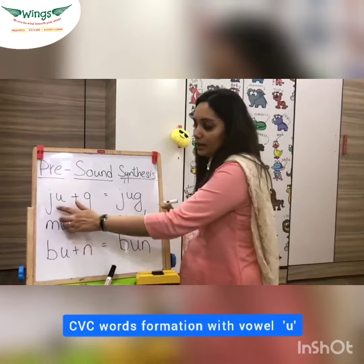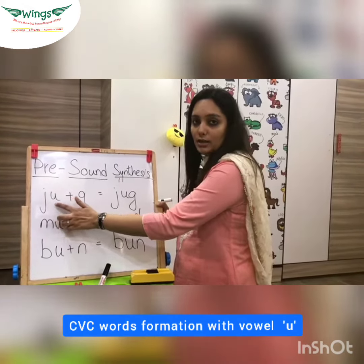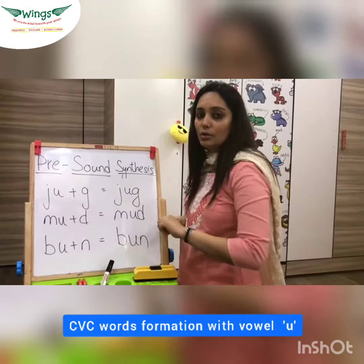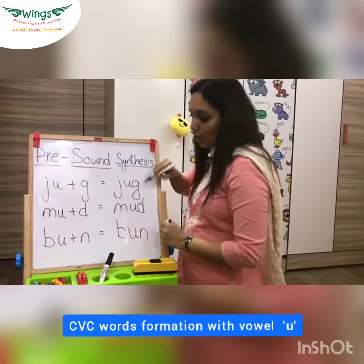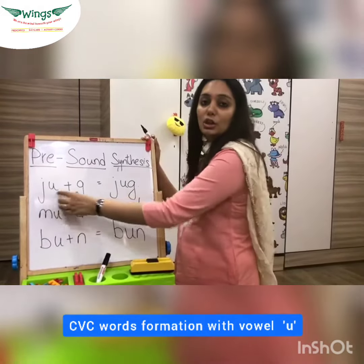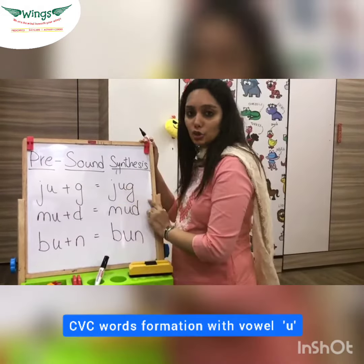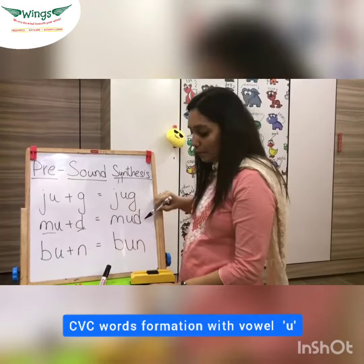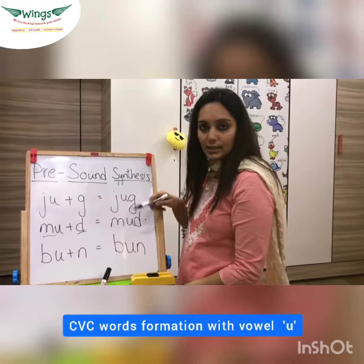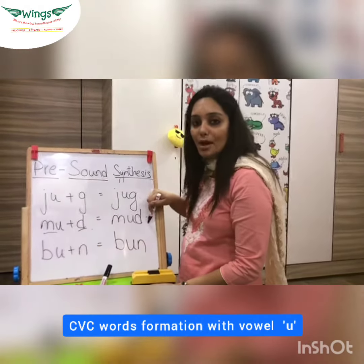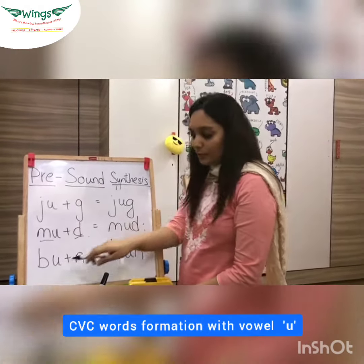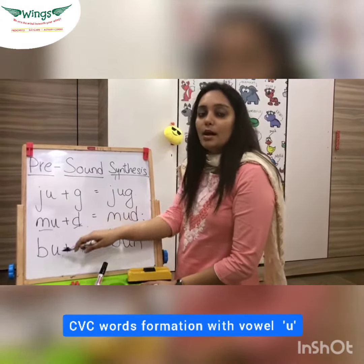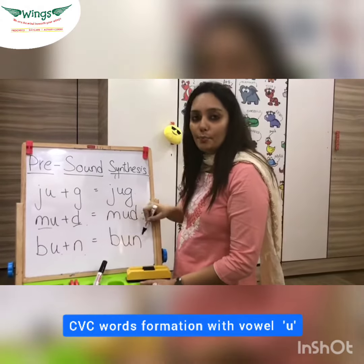So here j-a is ja. And when we add a new sound, g, it becomes jug — j, a, g: jug. M, a, d: mud. B, a, n: ban.